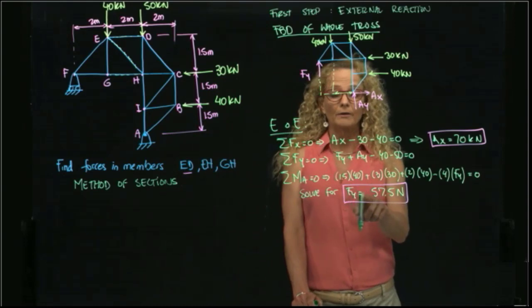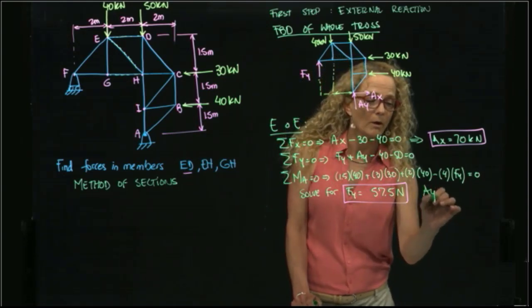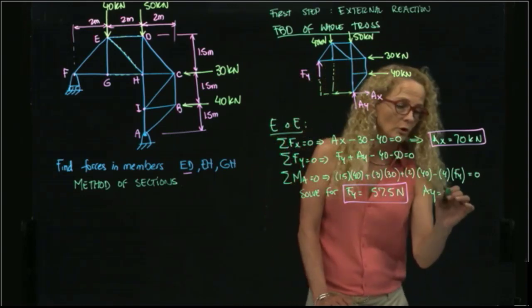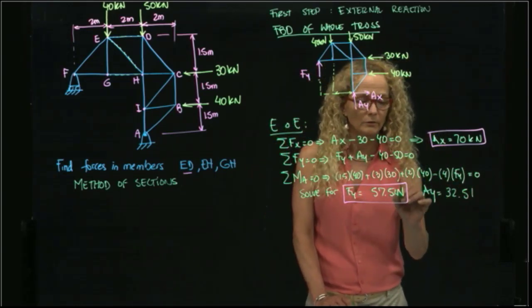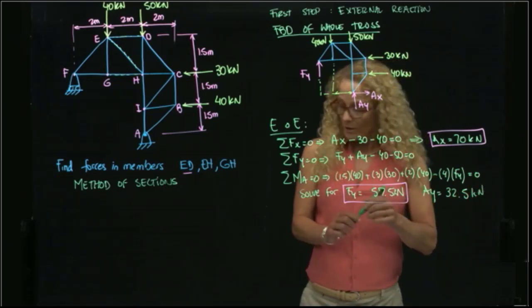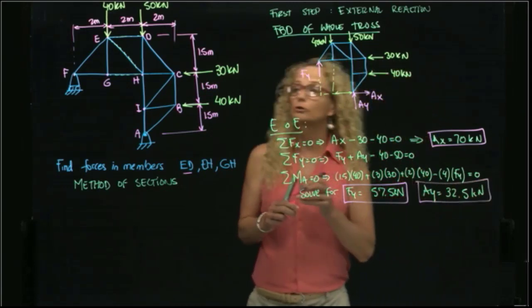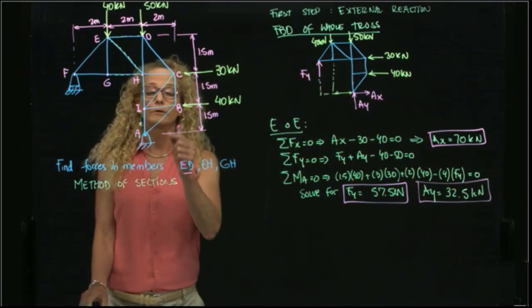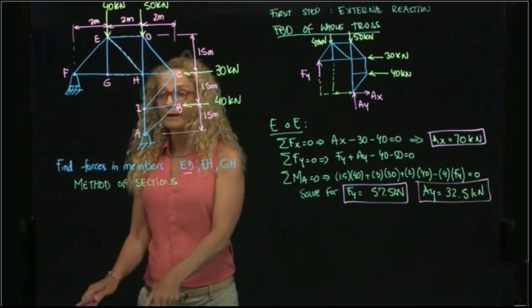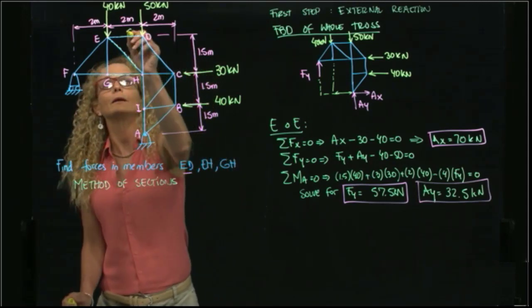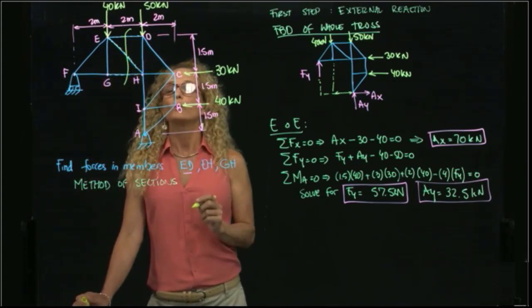Now that we have Fy, we substitute it back into the force-Y equation and get Ay equals 32.5 kilonewtons. Now that we have our external reactions, we can make our cut to use the method of sections. The cut I will make passes through the three members we want to find.